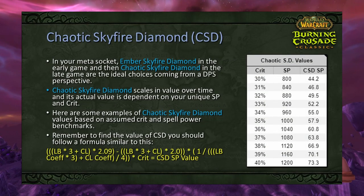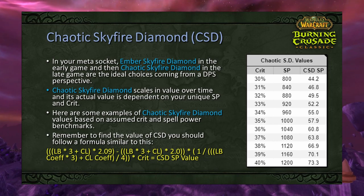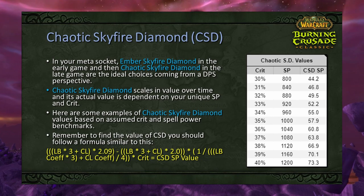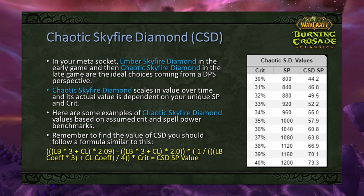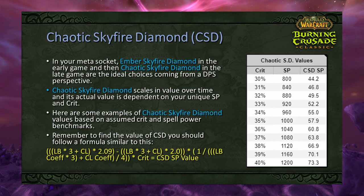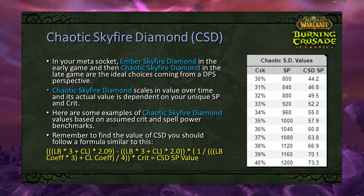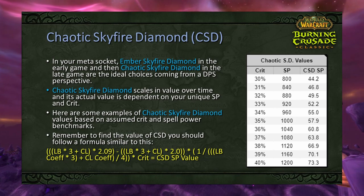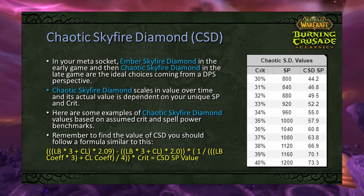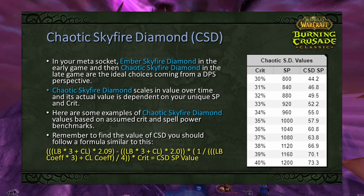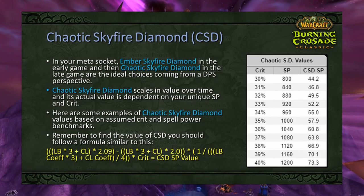Socket bonuses are not always valuable — compare the EP weight of the socket bonus against the best gems you could put in those sockets instead. Use tools like 70 Upgrades to determine if the available bonus is competitive versus simply gemming your highest EP gem. Regarding Chaotic Skyfire Diamond's scaling: at around 800 spell power and 30% crit it's worth about 44 spell power, scaling up to around 73.3 spell power equivalent in Sunwell at 40% crit and 1200+ spell power.